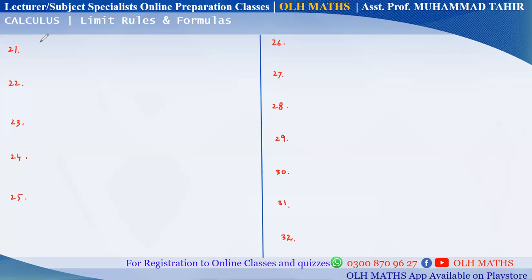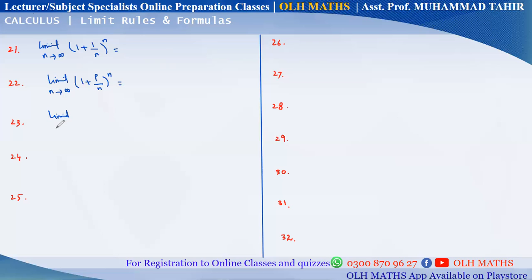Formula 21 — very important. Limit as n approaches infinity of (1 + 1/n) raised to the power n. This is also in the form: limit as x approaches infinity of (1 + x) raised to 1 over x. It can also be written as: limit x approaches 0 of (1 + px) raised to 1 over x.